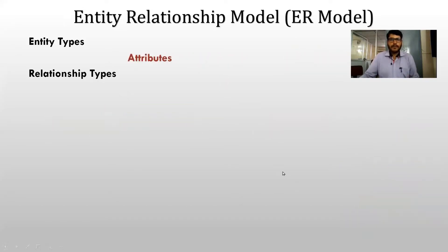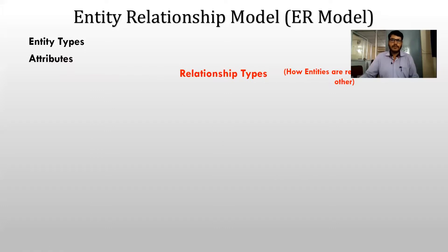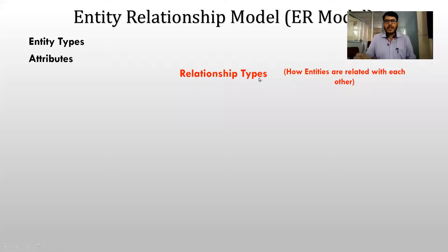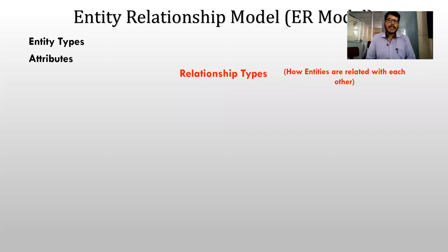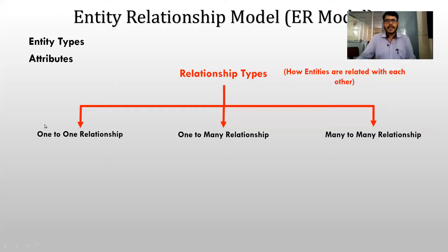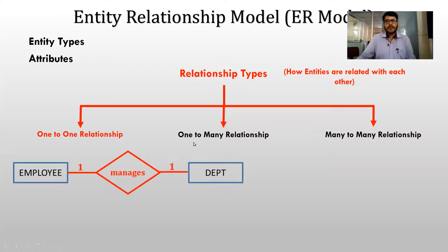Now let us see what we mean by relationship type. Relationship type highlights how entities are related with each other. The notation for a relationship type is a rhombus or diamond symbol. In relationship types, we have different types: one-to-one relationship, one-to-many relationship, and many-to-many relationship.